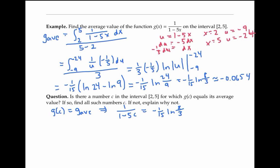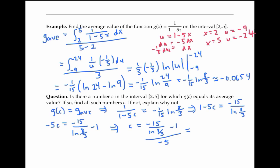There are lots of ways to solve this equation, but I'm going to take the reciprocal of both sides, subtract one from both sides, and divide by negative five. This simplifies to three over ln(8/3), plus one fifth, which is approximately 3.25. And that x value does lie inside the interval from two to five.